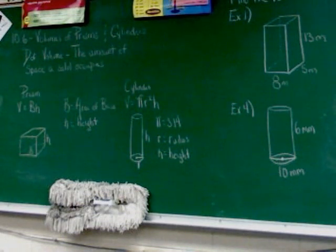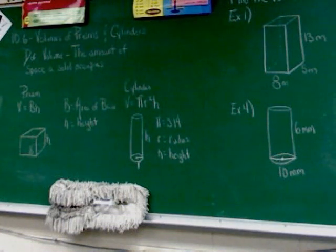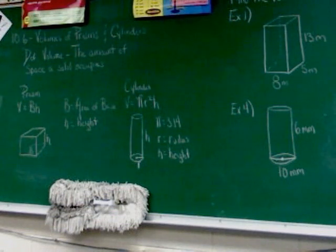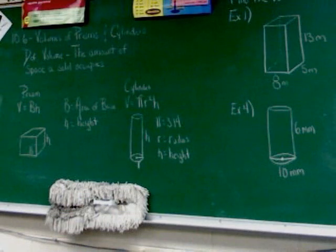Now if you're trying to find the volume of an irregularly sized shape — let's say a rock — what you do is find a graduated cylinder, fill it with some liquid, drop the rock in, see how much liquid is displaced, and that turns out to be the volume. But we're not doing that here, because these are regular sizes.